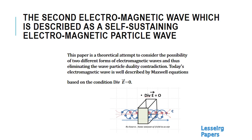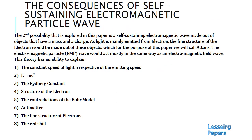Before going into the exact detail of this second electromagnetic particle wave, I would also like to talk about the consequences of a second self-sustaining electromagnetic particle wave. Fundamentally, this wave is made out of a lot of particles that have a mass and a charge. And as light is mainly emitted from electrons, the fine structure of the electron has to be made out of these particles. For the purpose of this video, we will call these particles atoms.